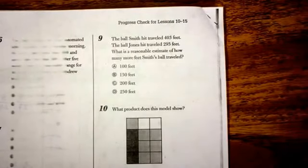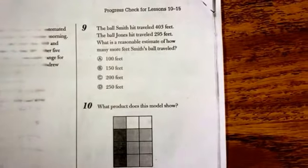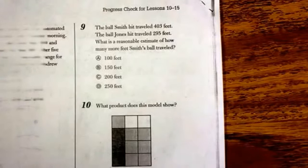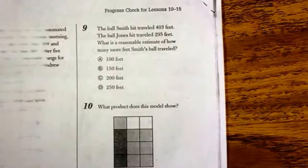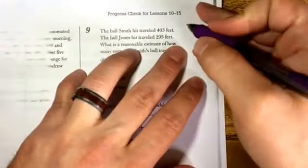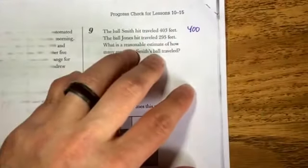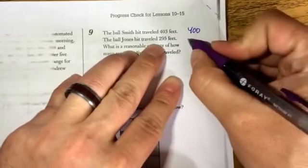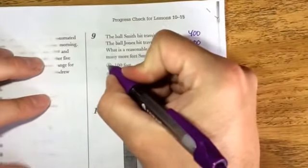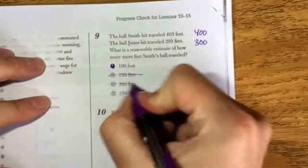The ball Smith hit traveled 403 feet. The ball Jones hit traveled 295 feet. What is a reasonable estimate of how many more feet Smith's ball traveled? So, if we're estimating, we round 403 to 400, about 400 feet. And 295 is about 300 feet. And so we know that Smith's ball traveled about 100 feet more. Okay, just makes sense if you round them.